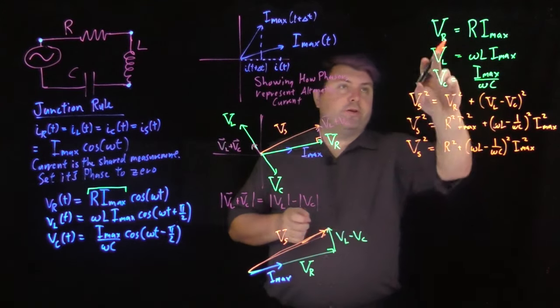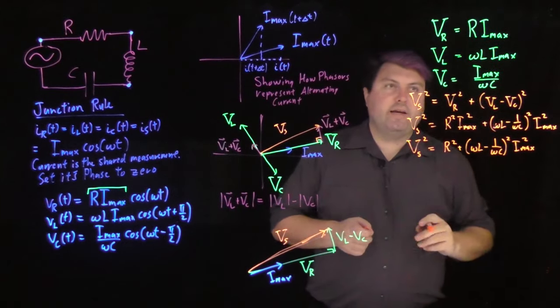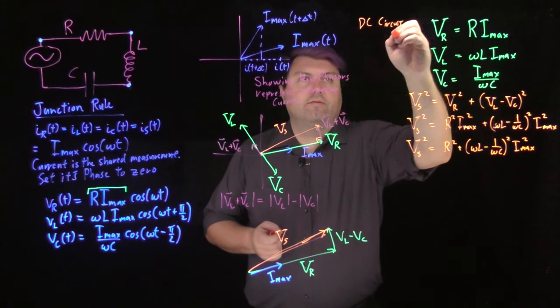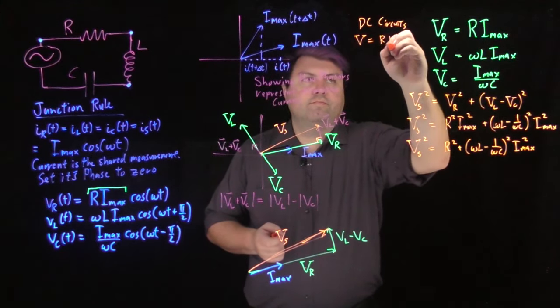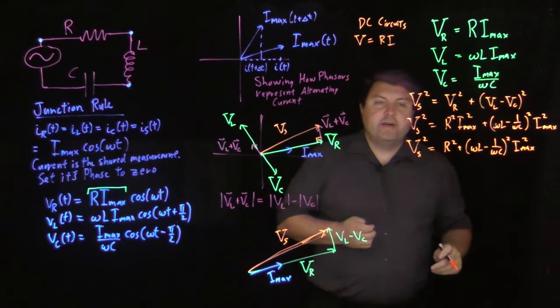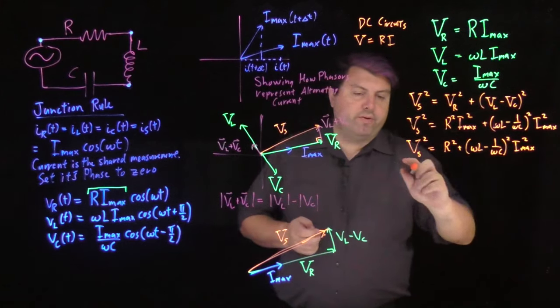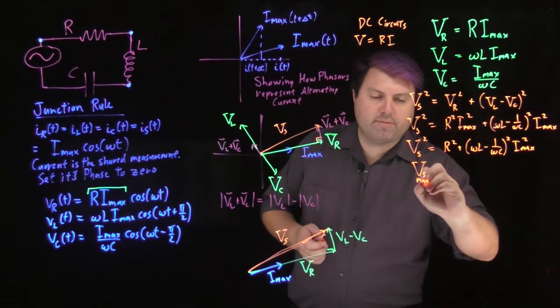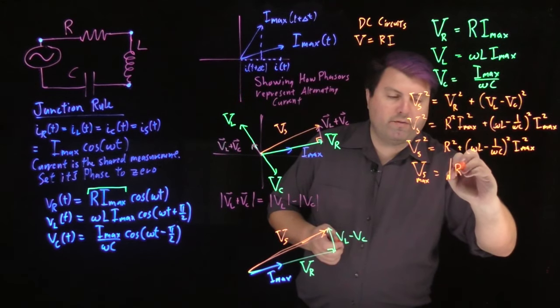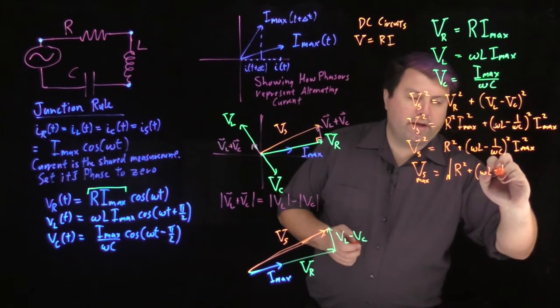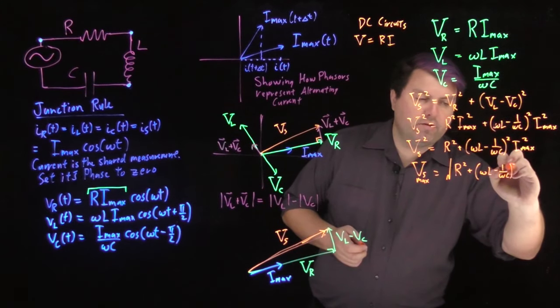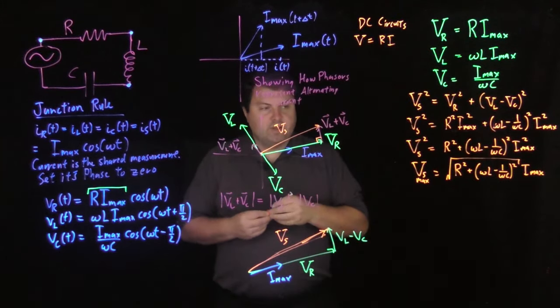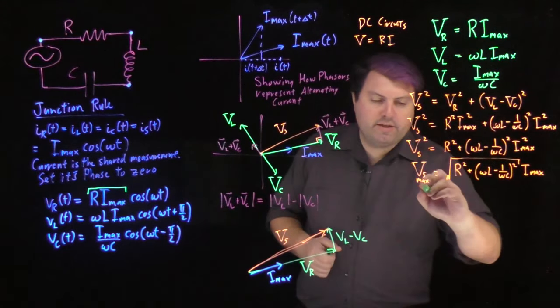So this looks very similar to Ohm's law. The voltage equals R times I. So we have again for DC circuits, V is equal to R times I. In this case for AC circuits, if I take the square root of this, I will get again the voltage of my source maximum is equal to the square root of R squared plus omega L minus 1 over omega C quantity squared I_max. So this is my relationship for AC circuits.